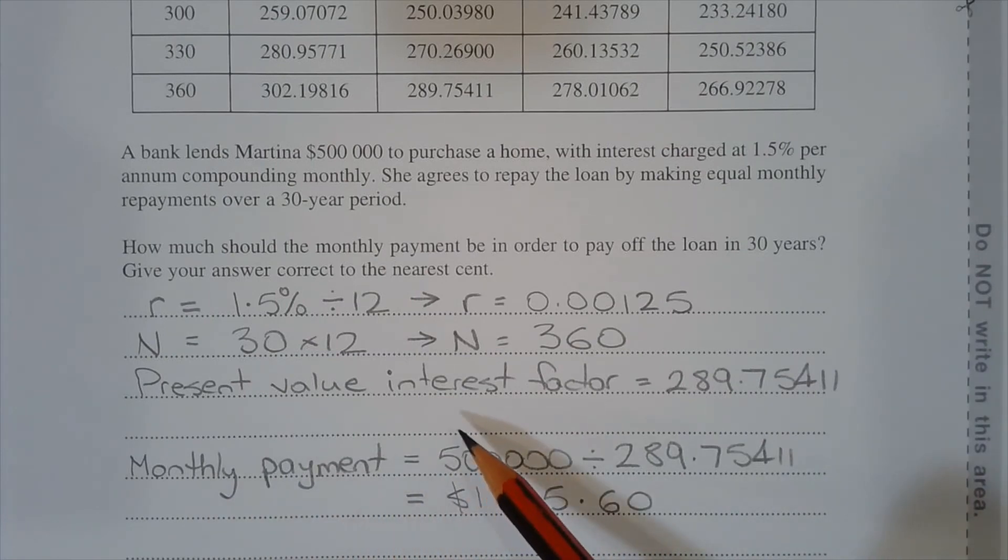The monthly payment is found by taking the loan amount which is $500,000 and dividing it by the present value interest factor, 289.75411, and that equals $1,725.60 to the nearest cent.